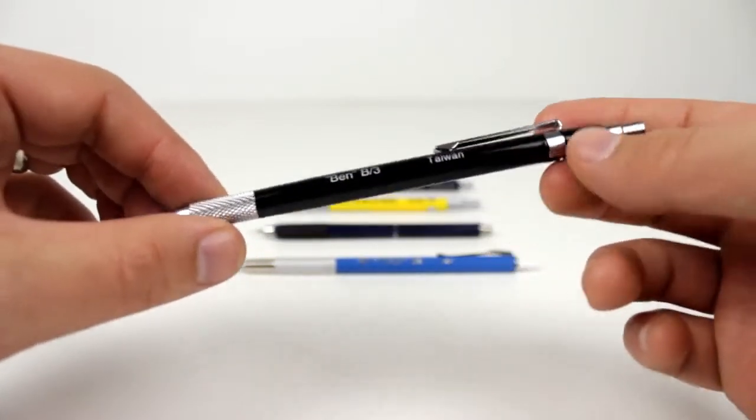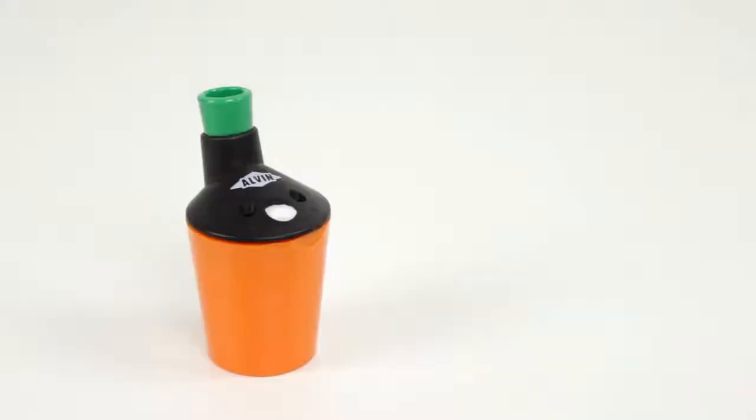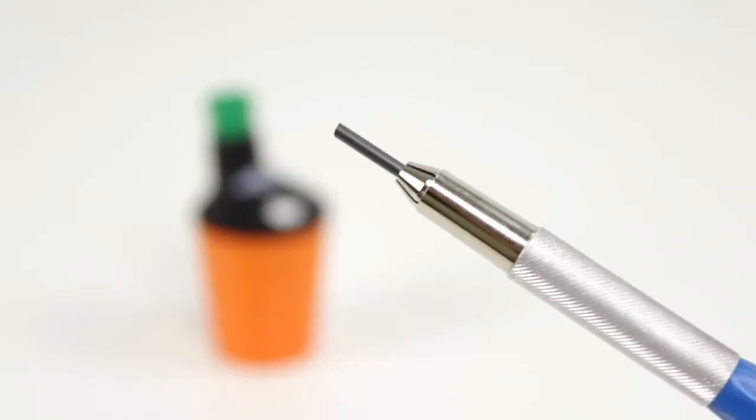Lead holders are a more traditional approach to writing or drawing. Most use 2mm graphite lead, which can be sharpened to a point using a lead pointer.